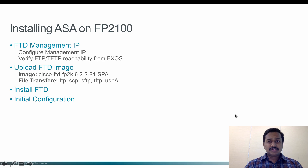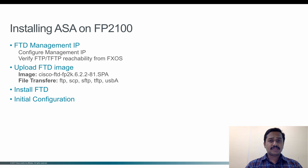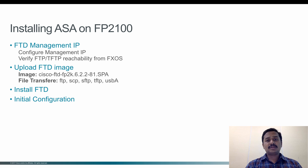Here is the key difference: when you have a Firepower 2100 series platform with FTD running, you will not be able to change the IP address on the FXOS for the management interface. If you want to change the IP address for the management interface, you have to go to FTD, change the IP address, save the configuration on the FTD, and then come back to the FXOS prompt and continue the rest of the process of downloading the image to FXOS and then installing.